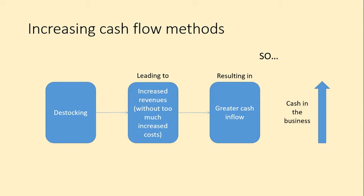You might want to increase cash flow by destocking when you know a large expense is coming up. Big retailers often have to pay rent every six months, so they need lots of cash available at those points. Some major companies that got into trouble — such as the computer game store Game and British Home Stores — undertook destocking to try to meet rent payments so they didn't become bankrupt or insolvent.